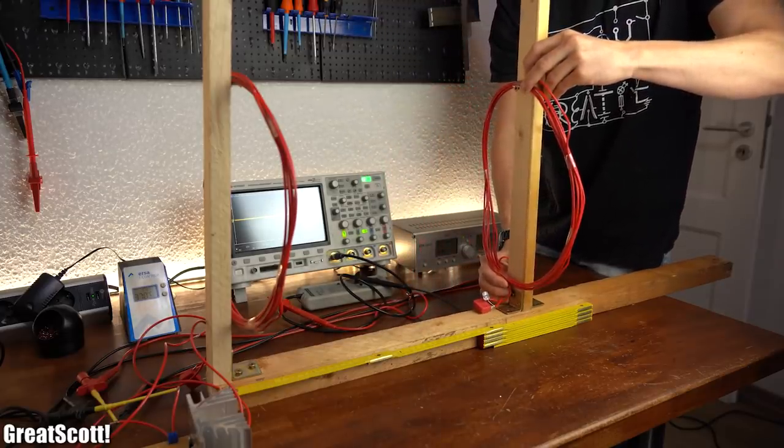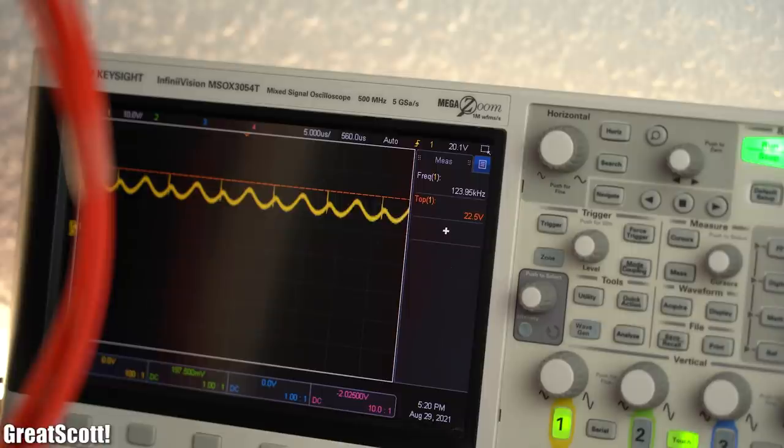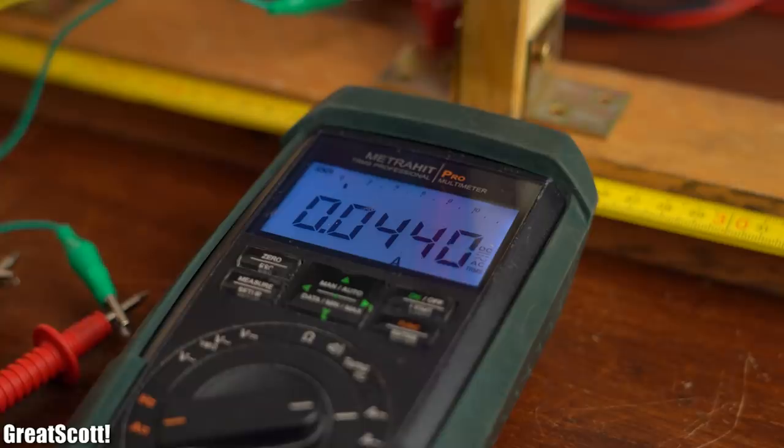This coil pair reached the best distance of 50cm, got the same voltage at 20cm as the 12-turn one, and features the highest short circuit current of 45mA so far.